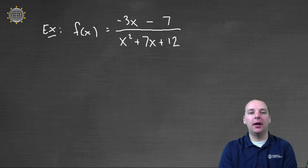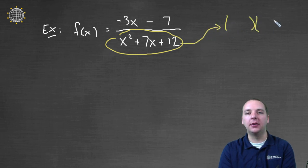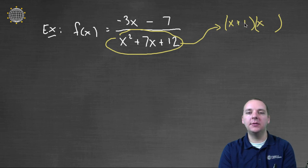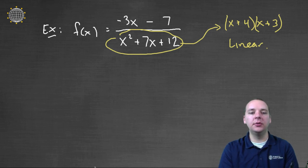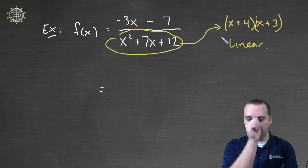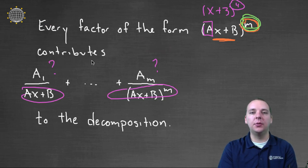So let me set up the template for one of these. Here's a function I'm trying to decompose. The first step in decomposing a rational expression — or in this case a function — is factoring the denominator. So how does he factor? It would be an X and an X, so it looks like X plus 4 times X plus 3. Let's double check: X times X is X squared, 3X and 4X makes 7X, and 4 times 3 makes 12. So I've factored the denominator, and notice these factors are linear — that's the important thing. So this expression is going to decompose somehow, and we have to consider these factors separately.